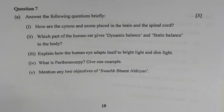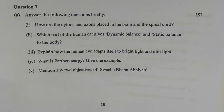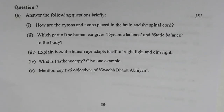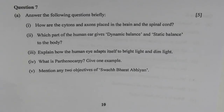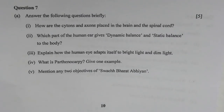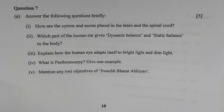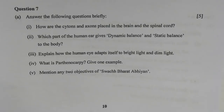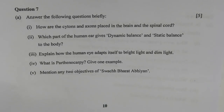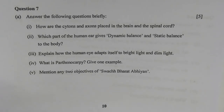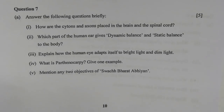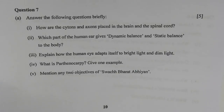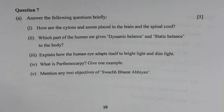Number four — what is parthenocarpy? The development of a fruit without prior fertilization is known as parthenocarpy. One example is the seedless watermelon. Number five — mention two objectives of Swachh Bharat Abhiyan: (1) to make India clean through behavioral changes, and (2) to eliminate the burden of communicable diseases like malaria, cholera, and diarrhea.